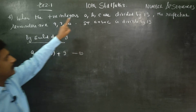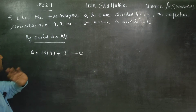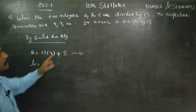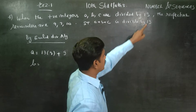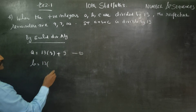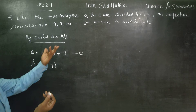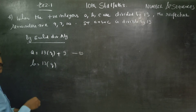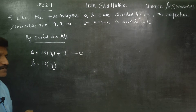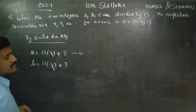Similarly, when B is divided by 13, using the formula B equals 13Q2 plus remainder, the remainder from the question is 7. So B equals 13Q2 plus 7. This is equation number 2.